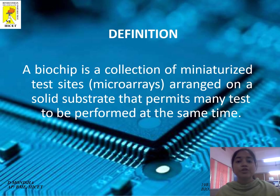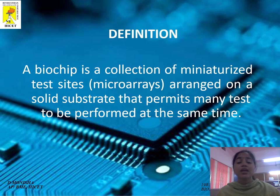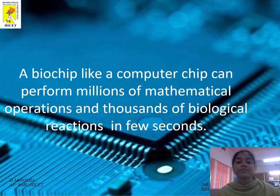Definition of Biochip: A biochip is a collection of miniaturized test sites like microarrays and DNA, arranged on a solid substrate that permits many tests to be performed at the same time. A biochip, like a computer chip, can perform millions of mathematical operations and thousands of biological reactions in a few seconds.